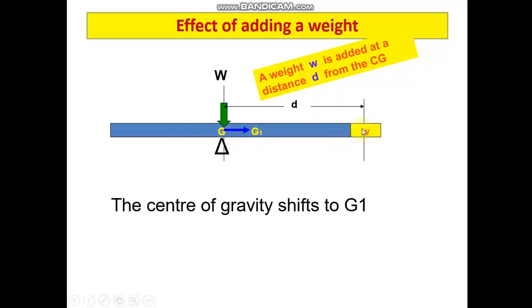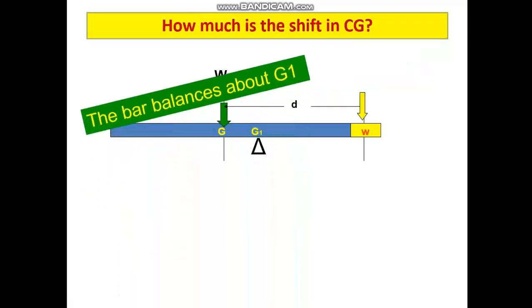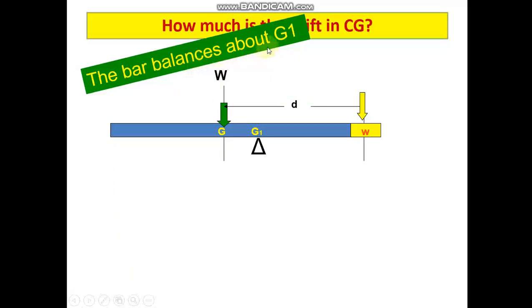Originally, in the previous case, we had G1 opposite to the removed mass. Here, because we are adding mass, the G1 will be towards the position of added mass. This is the basic difference which we need to keep in mind: how centre of gravity is going to shift. The bar will now balance about new centre of gravity G1.